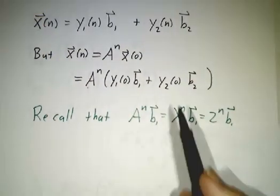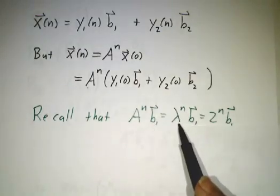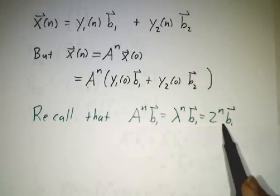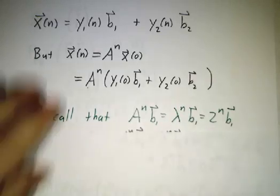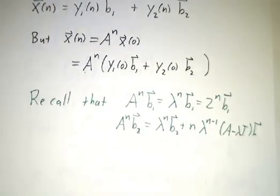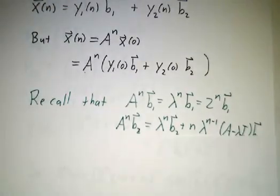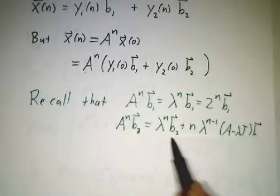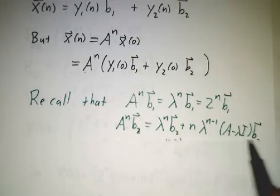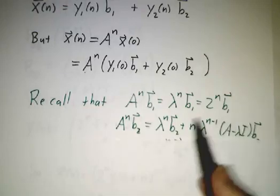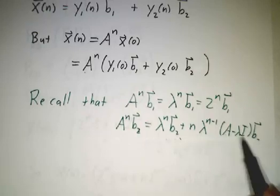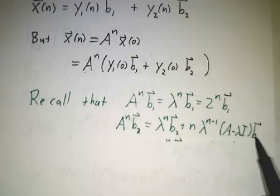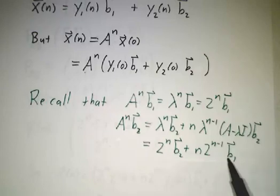So acting on that eigenvector, it just multiplies by the nth power of the eigenvalue, and gives us 2 to the n times b1. Acting on the power vector, it gives us the nth power of the eigenvalue times the power vector, plus a second term, which involves A minus lambda I times the power vector. But that's just our first basis element.